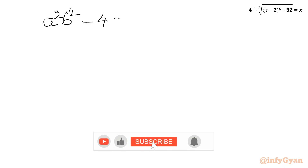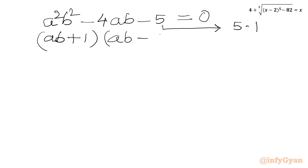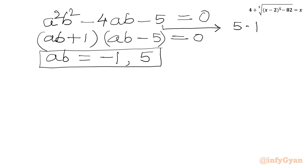Now we factor A squared B squared minus 4AB minus 5 equal to 0. The factors of 5 are 5 times 1, so we split the middle term as minus 5AB plus AB, giving factors (AB plus 1)(AB minus 5) equal to 0. By the zero product rule, AB equals negative 1 or AB equals 5.